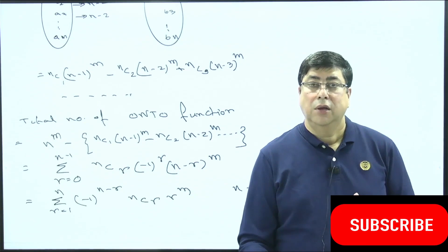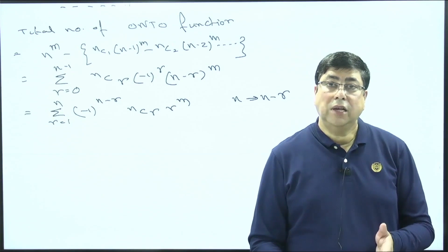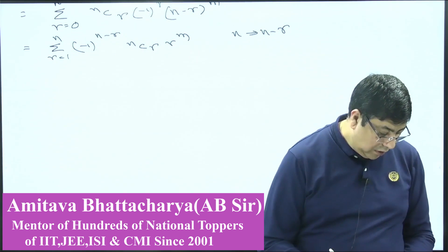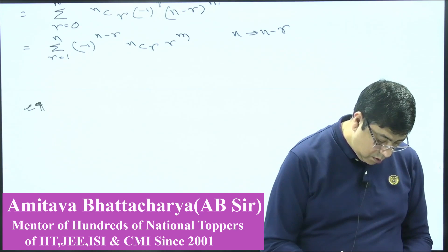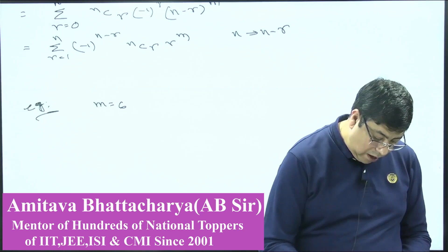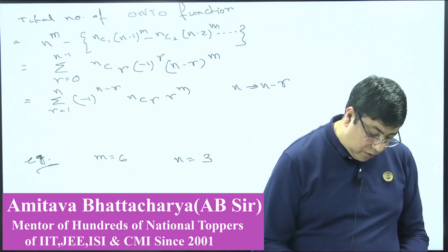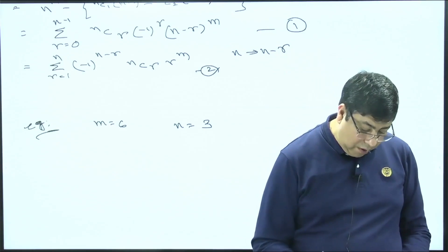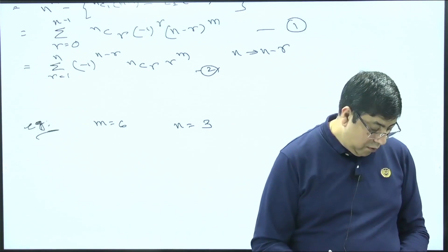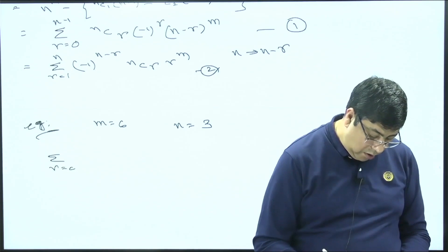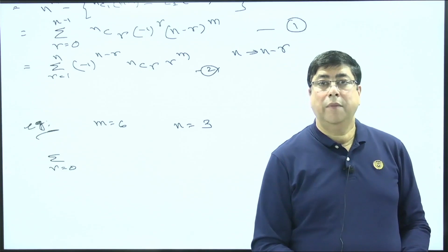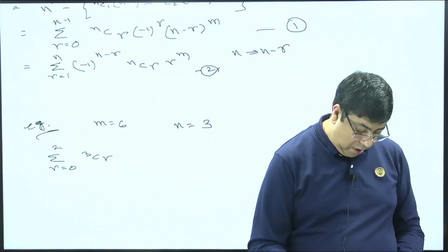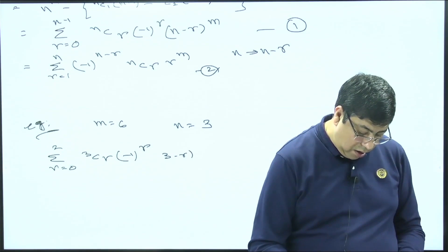Now let us apply the formula with an example: m = 6 and n = 3, meaning set A has 6 elements and set B has 3 elements. Using formula 1, total number of onto functions = summation of r = 0 to 2 of (−1)^r · 3Cr · (3−r)^6. Substituting: for r=0 we get 3^6; for r=1 we get −3C1·2^6; for r=2 we get +3C2·1^6.